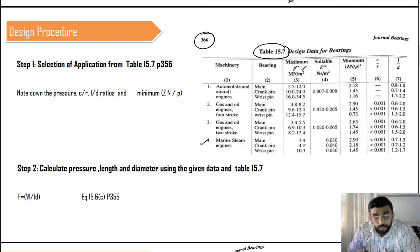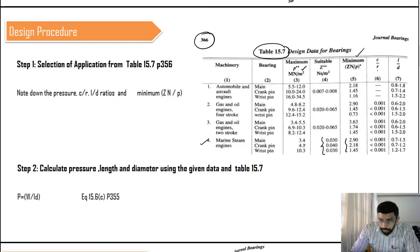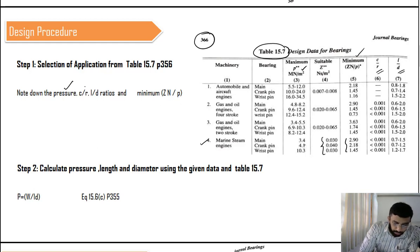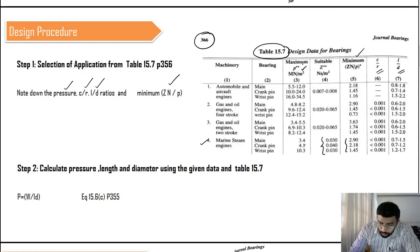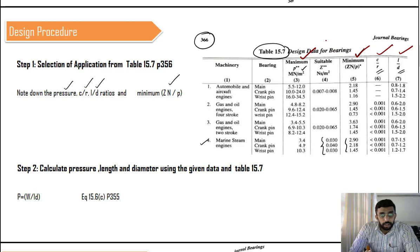From Table 15.7 we also get the suitable viscosity range, the minimum value of ZN/P, the c/r ratio, and the l/d ratio for the specified application. What we are supposed to do is go to Table 15.7 and note down these four values: pressure, c/r, l/d ratio, and minimum ZN/P. Noting them down doesn't mean we must use them directly — we can also use them as reference values.